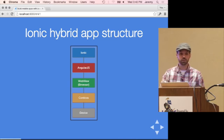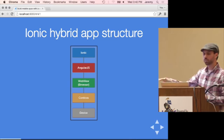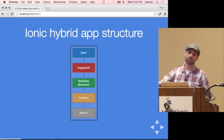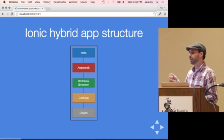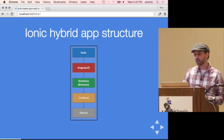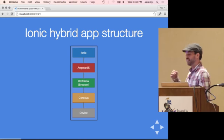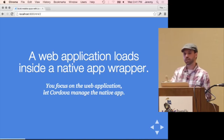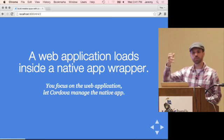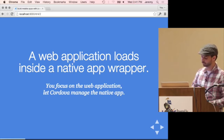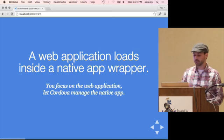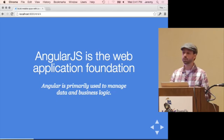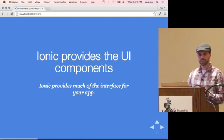Then we have Angular. Angular is going to be the foundation for your web application that runs inside that browser. Ionic sits alongside Angular to create the UI and functionalities like side menus and tabs. In brief, it's a web application that loads inside a native app wrapper — instead of putting it on a server, it runs directly on the phone. Cordova facilitates that communication, Angular is the foundation of your web application, and Ionic provides the UI elements, similar to Bootstrap.